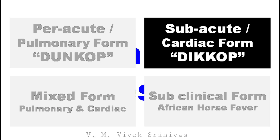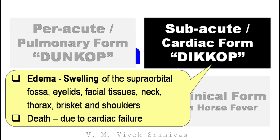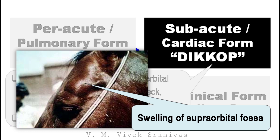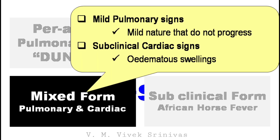Subacute or cardiac form. In this form, edematous swelling of the supraorbital fossa, eyelids, facial tissues, neck, thorax, brisket, and shoulder region, followed by death due to cardiac failure, is noticed. The picture shown here is the swelling of the supraorbital fossa in a horse in the cardiac form. Mixed form. In this, both pulmonary and cardiac signs are noticed, but mild in nature and do not progress.